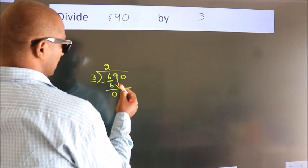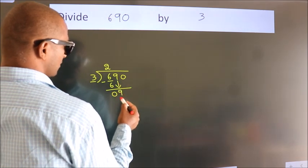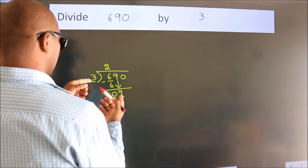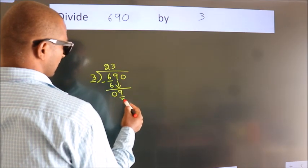After this, bring down the beside number. So, 9 down. So, 9. When do we get 9? In 3 table, 3 3s, 9. Now, we subtract, we get 0.